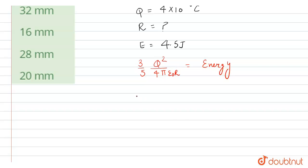Now put the values: 3 upon 5 times q is 4 microcoulomb, that equals 16 into 10 to the power minus 12 divided by radius R, and 1 upon 4 pi epsilon 0 equals 9 into 10 to the power 9, equals 4.5.